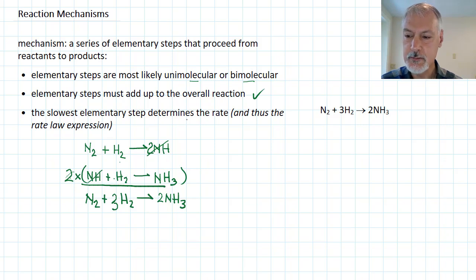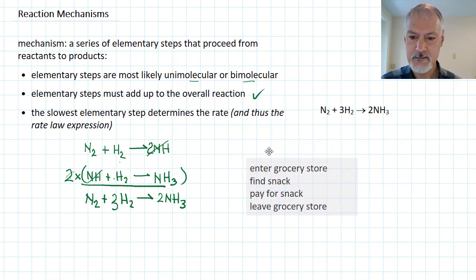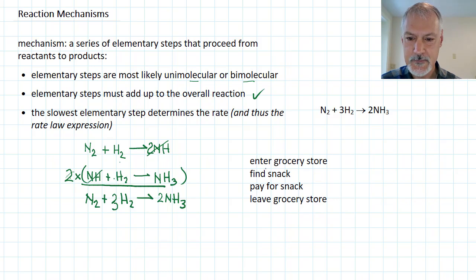The slowest step determines the rate law expression. Consider the act of purchasing a snack at a grocery store you frequently visit. You have to enter the grocery store, find the snack, pay for the snack, and leave the grocery store. On the day you arrive, it's 5 o'clock in the afternoon and quite busy, and there turns out to be one cashier available. As you walk into the store, you quickly find your groceries because you've been there before. You then line up to pay. And there's 7 or 8 people in line. Eventually you get through and pay for the snack and then leave the grocery store. This step, the paying for snack, really determines how quickly you can leave and enter the store.